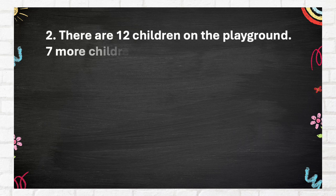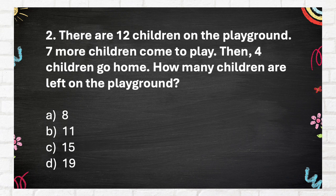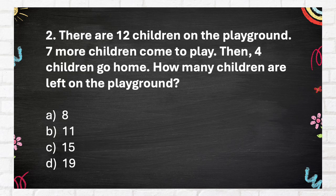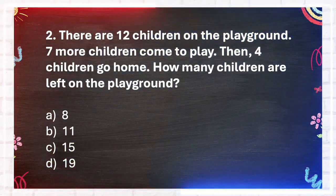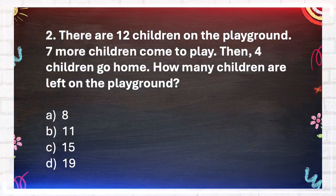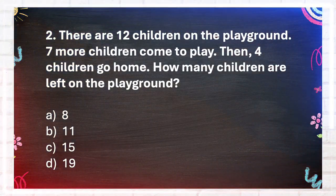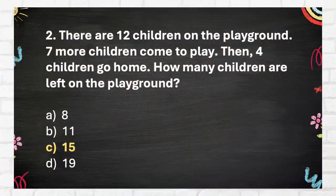Question number 2. There are 12 children on the playground. Seven more children come to play. Then, four children go home. How many children are left on the playground? A 8, B 11, C 15, D 19. The answer is C, 15.